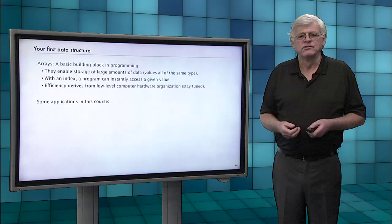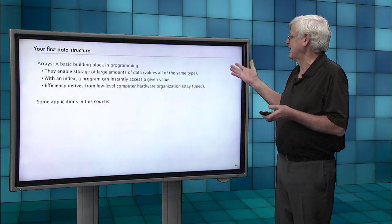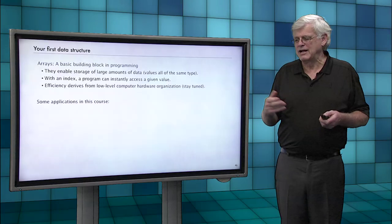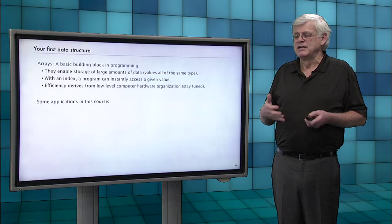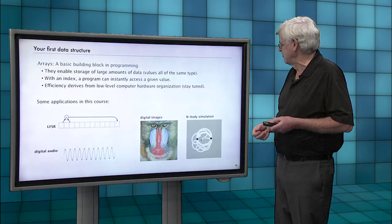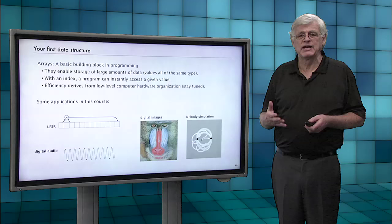So let's summarize briefly. Arrays are a very basic building block in programming. They let us store large amounts of data, values of all the same type. We can instantly access a given piece of data with index or indices in two-dimensional arrays. And we'll see later how this efficiency derives from the way that computer hardware is organized. And we're going to see several more applications later in this course, from a shift register for cartography to digital audio to processing digital images to simulating n bodies in physics. So all of those things with this one data structure and we're going to study other data structures as well.